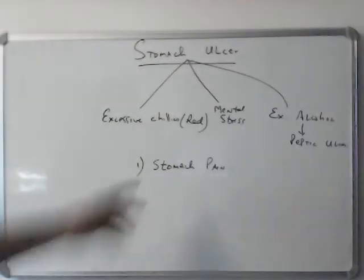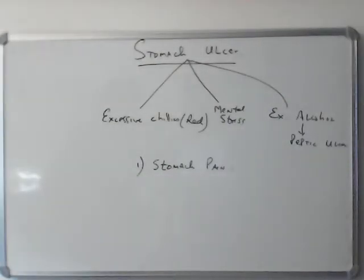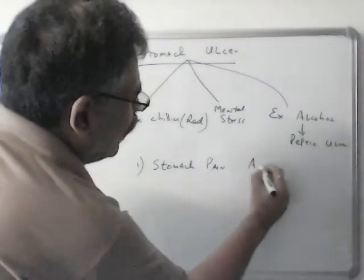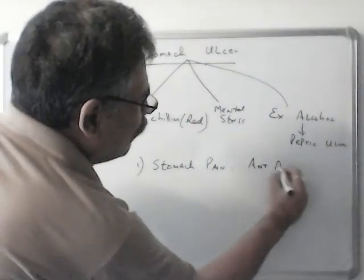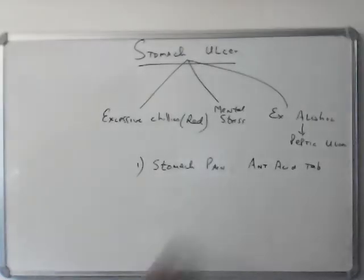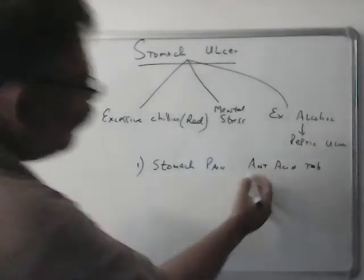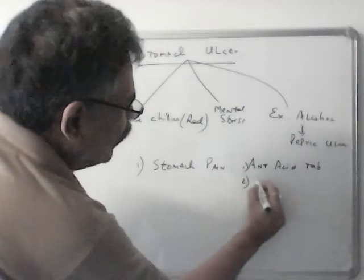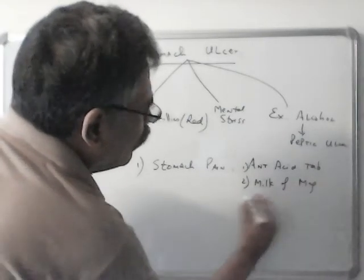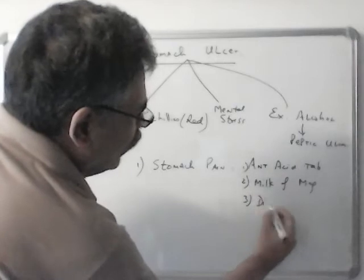Most of the Stomach Ache is due to Acidity, Excessive Acid. So to neutralize that either you can take an Antacid Tablet which is an Alkali. It neutralizes Acid plus Alkali. Or you can take Milk of Magnesia. Digene is also an Alkali.